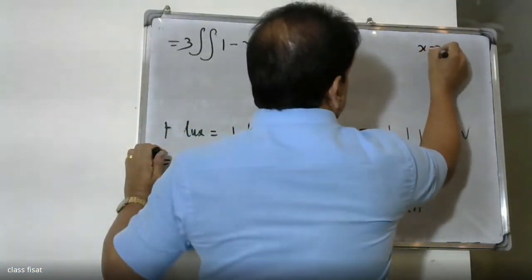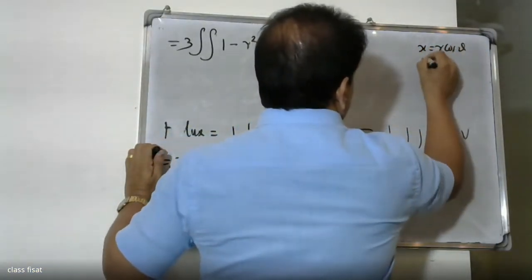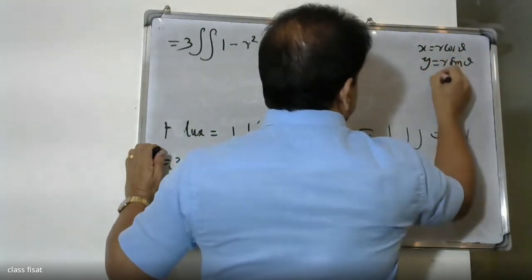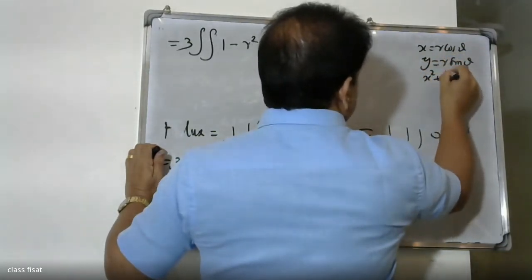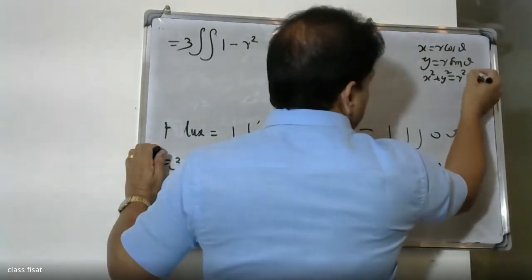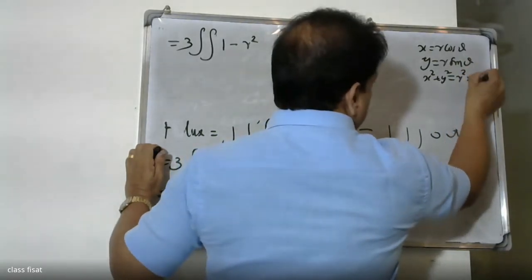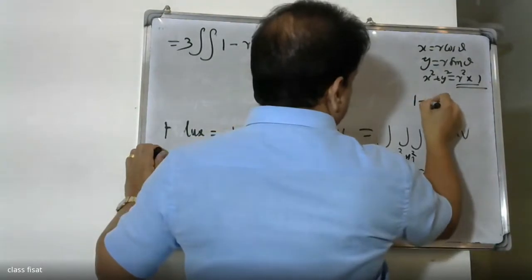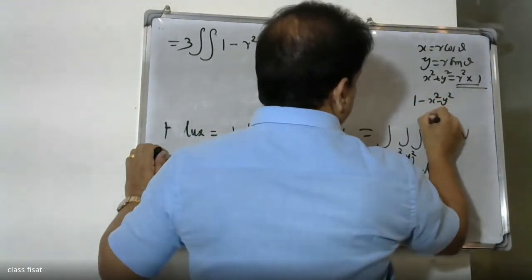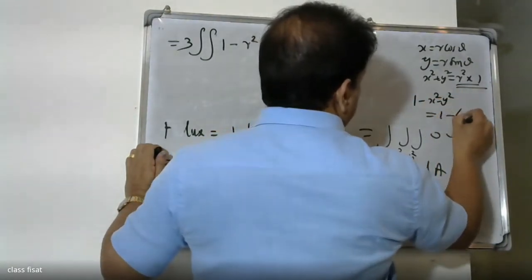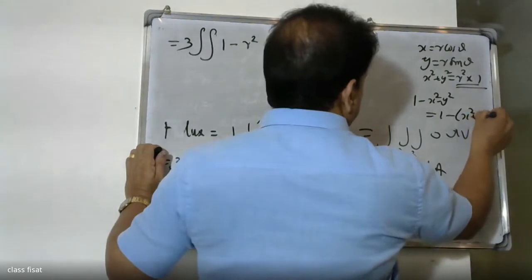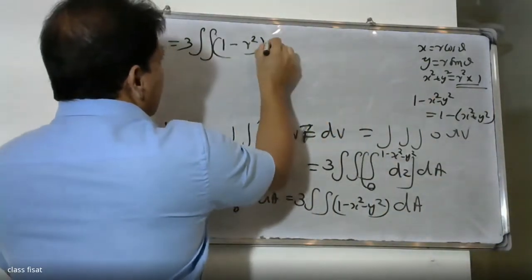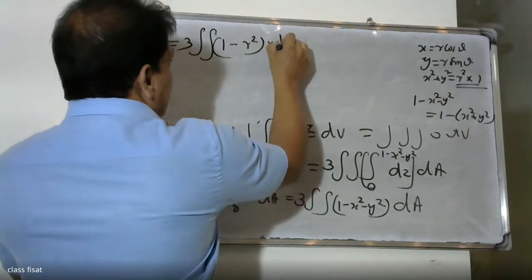Now we convert to polar coordinates: x = r cos theta, y = r sin theta, so x squared plus y squared = r squared (sin squared theta + cos squared theta) = r squared. Therefore 1 minus x squared minus y squared becomes 1 minus r squared, and dA = r dr d-theta.